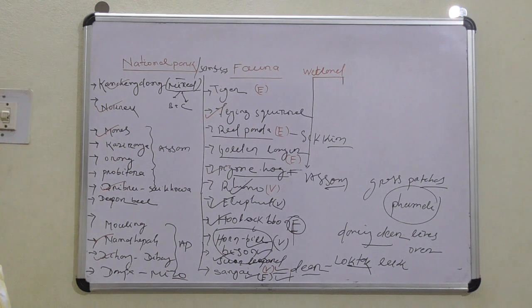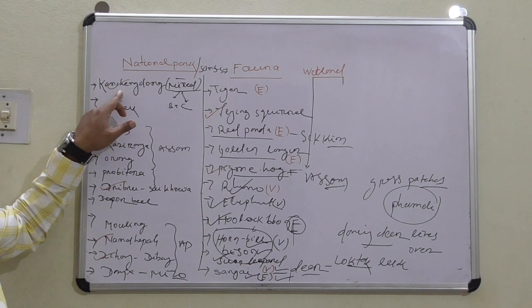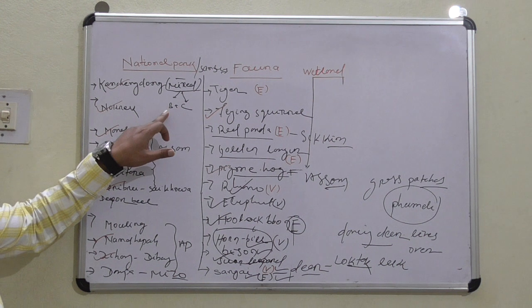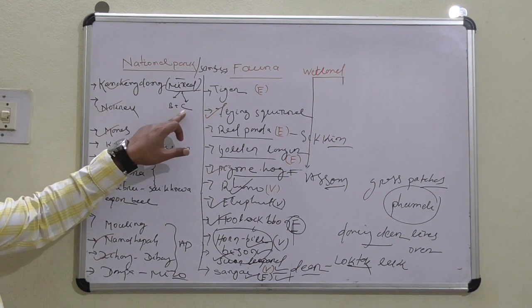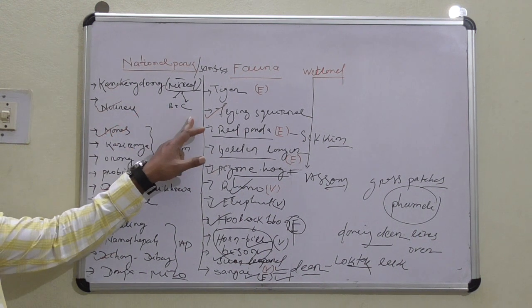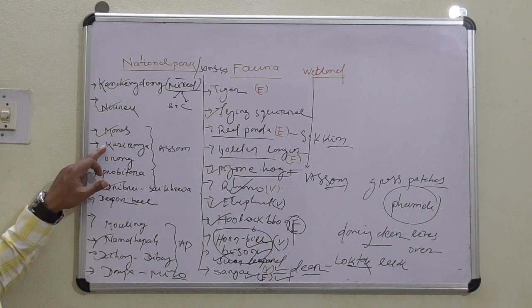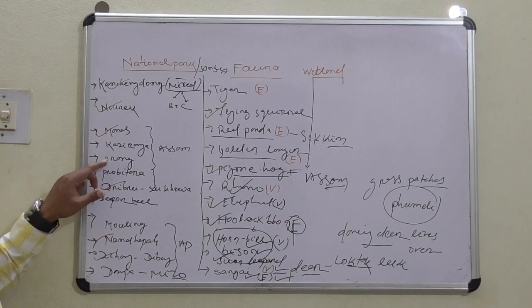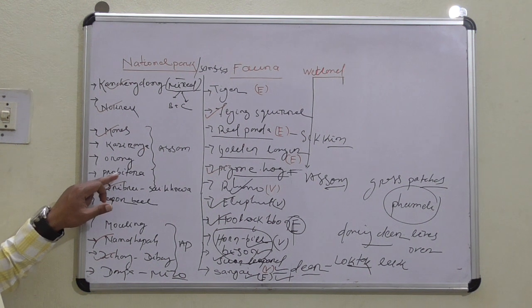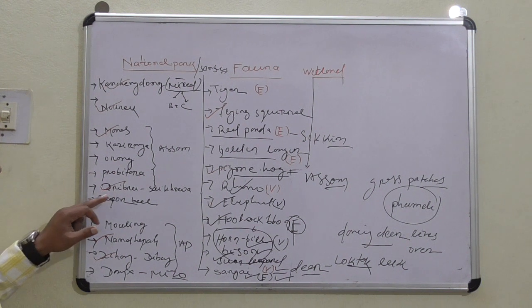Next comes to the national parks. Kanchenjunga Biosphere Reserve is the only mixed biosphere reserve of India, having biological importance and cultural importance. That is why mixed heritage means biological and cultural. Nokrek Biosphere Reserve in Meghalaya. Manas, Assam, Biosphere Reserve. Kaziranga, Assam. Orang is a national park. Pobitora is a bird sanctuary. Orang and Kaziranga have tigers. Dibru-Saikhowa, Assam. Deepor Beel, Assam.